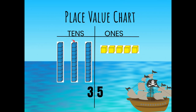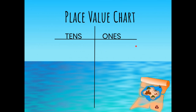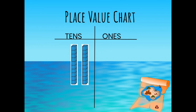We can count that as 10, 20, 30, 31, 32, 33, 34, 35. Let's try another one. Here we have two groups of ten — 10, 20 — and we write that with a two for two groups of ten. And we have three ones, so we would write that as a three. So here we've made the number 23: 10, 20, 21, 22, 23.